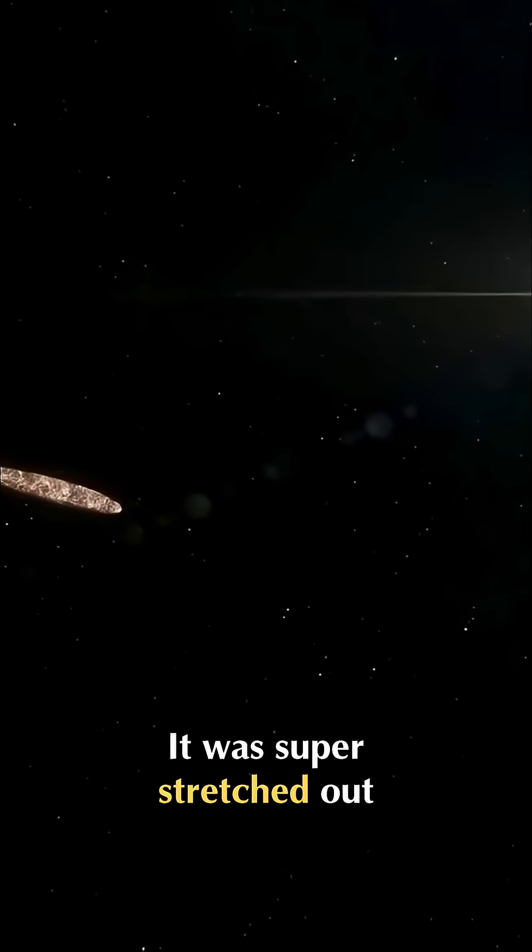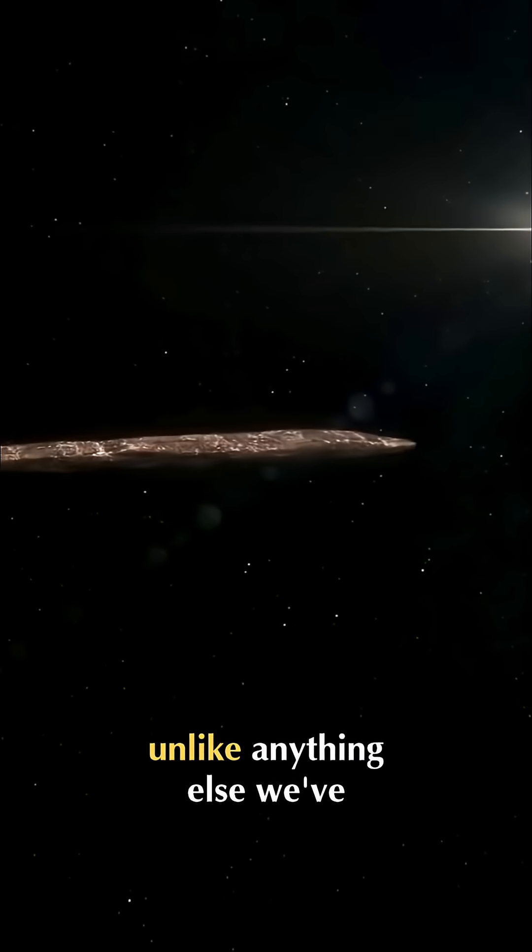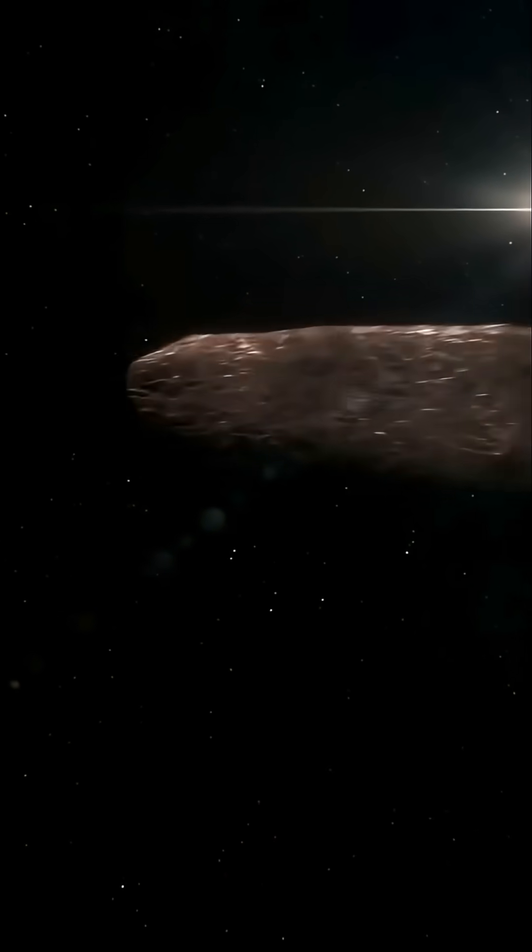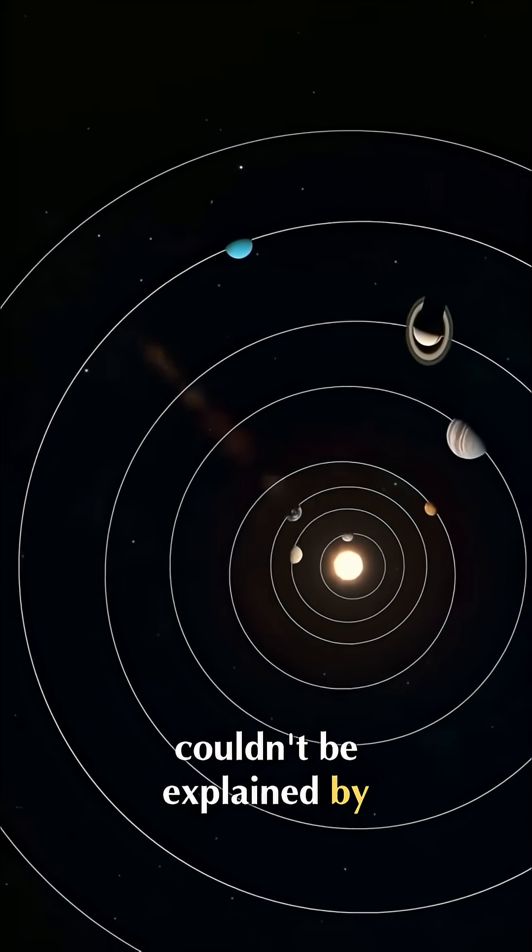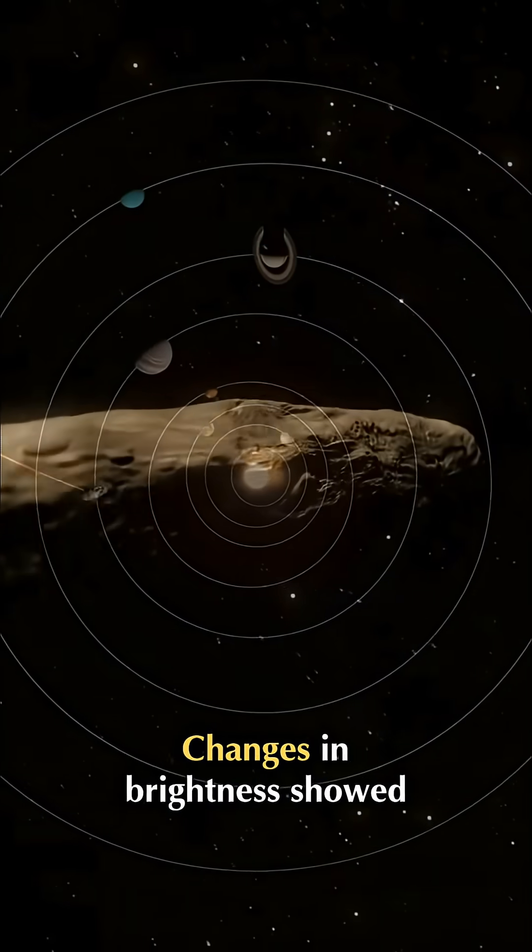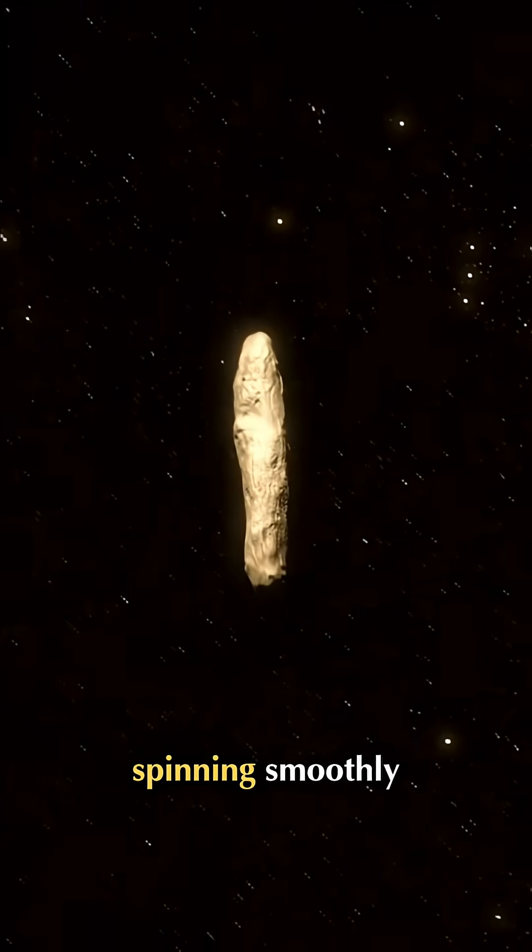It was super stretched out, about 10 times longer than it was wide, unlike anything else we've spotted in space. It also sped up in a way that couldn't be explained by gravity alone. Changes in brightness showed it was tumbling end over end, instead of spinning smoothly.